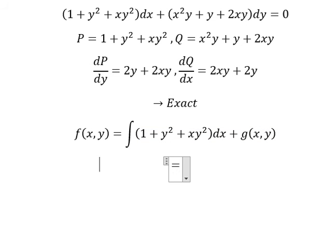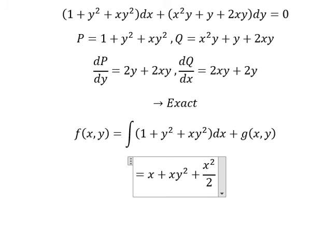We have x. The integration of y squared, we have xy squared, because x will be variable and y is just like a number. For xy squared, we have x squared over 2 times y squared.